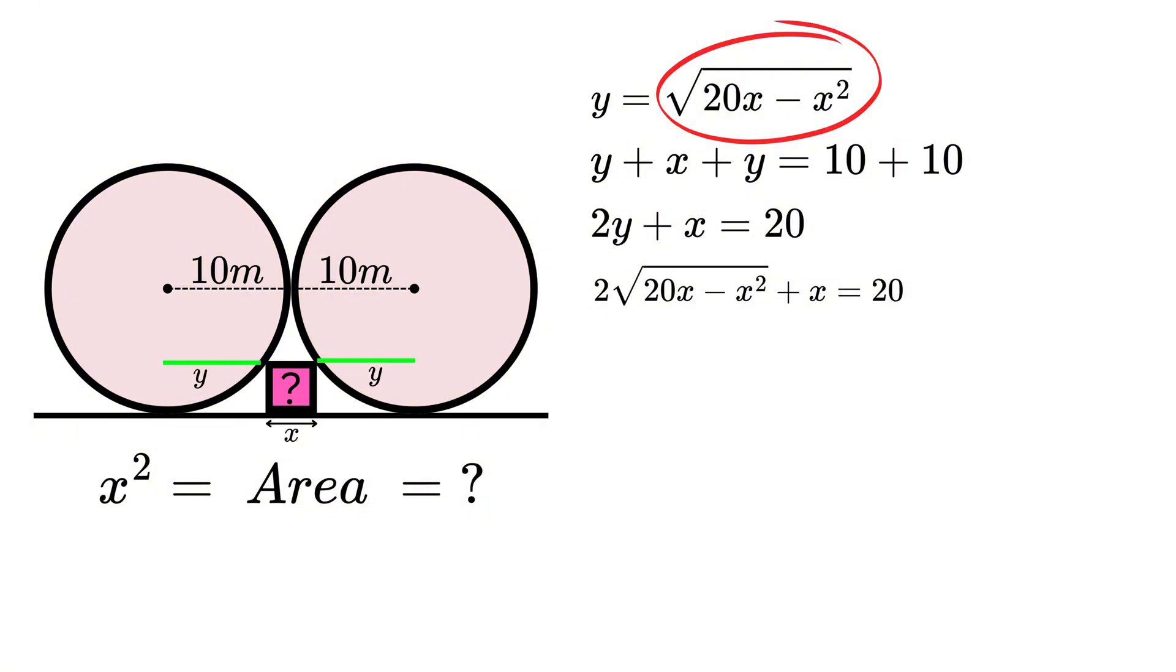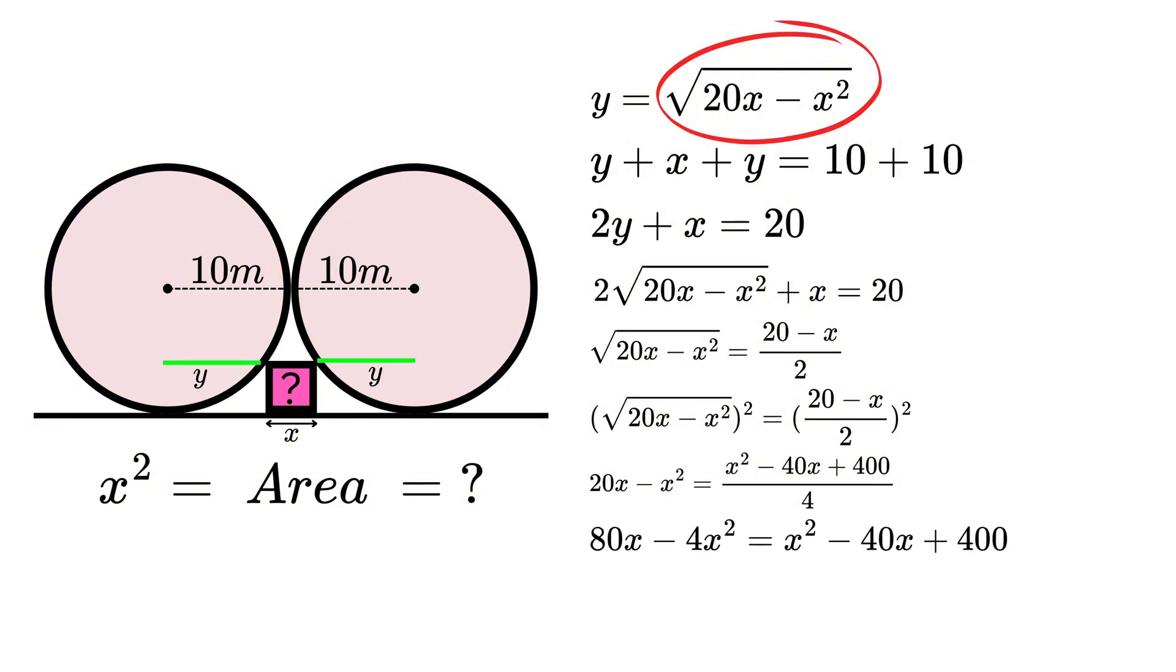We can subtract x from both sides and divide by 2. Now when we square both sides, we end up with 20x - x² = (x² - 40x + 400)/4. We can then multiply both sides by 4 to give us 80x - 4x² = x² - 40x + 400.